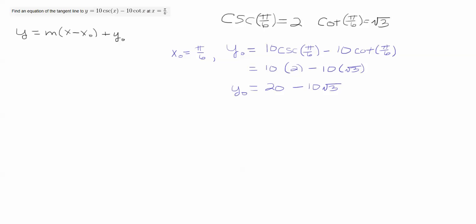Now that leaves us to find m. And m, remember, is the slope of the tangent line to the curve. And we find the slope of the tangent line to the curve by taking the derivative at the coordinate. So now all that's left to do is take that derivative.